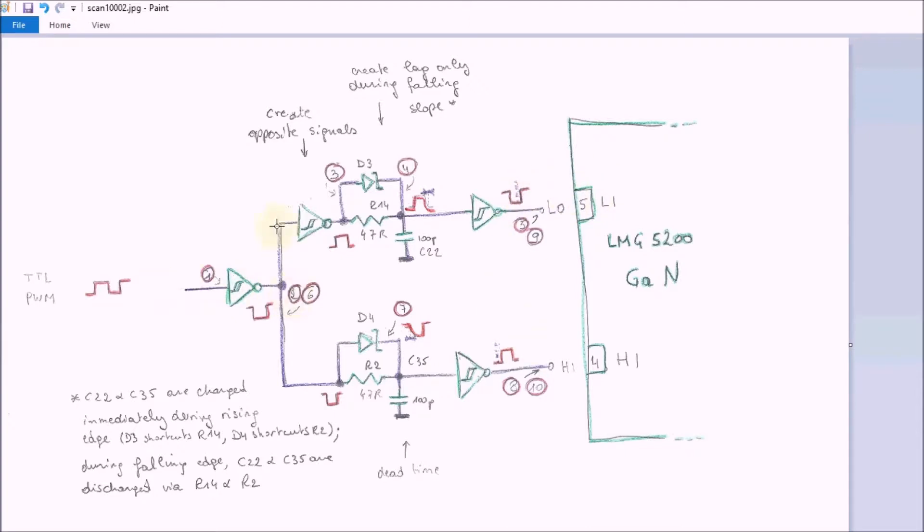And we have two traces here. We have the low trace which I have drawn on the top of the image, which is a bit counter-intuitive. And we have the high part of the schematic. And let's see what's happening here.